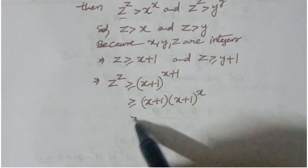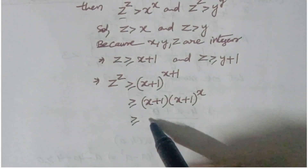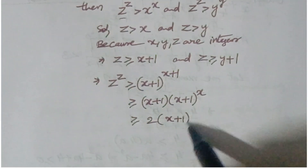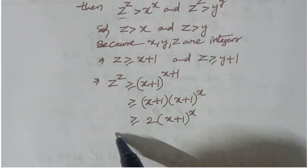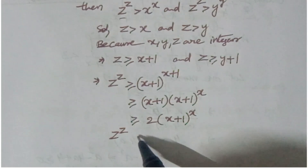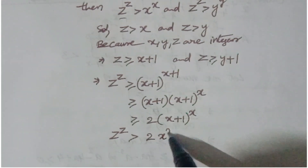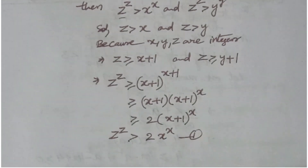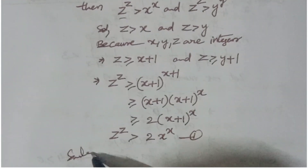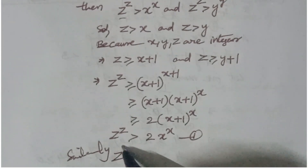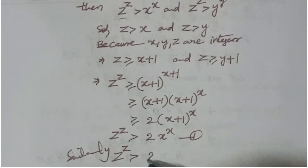This can be written as (x+1) times (x+1)^x, which simplifies to 2 times x^x. Therefore, z^z is greater than 2 times x^x. Similarly, you can write z^z is greater than 2 times y^y.